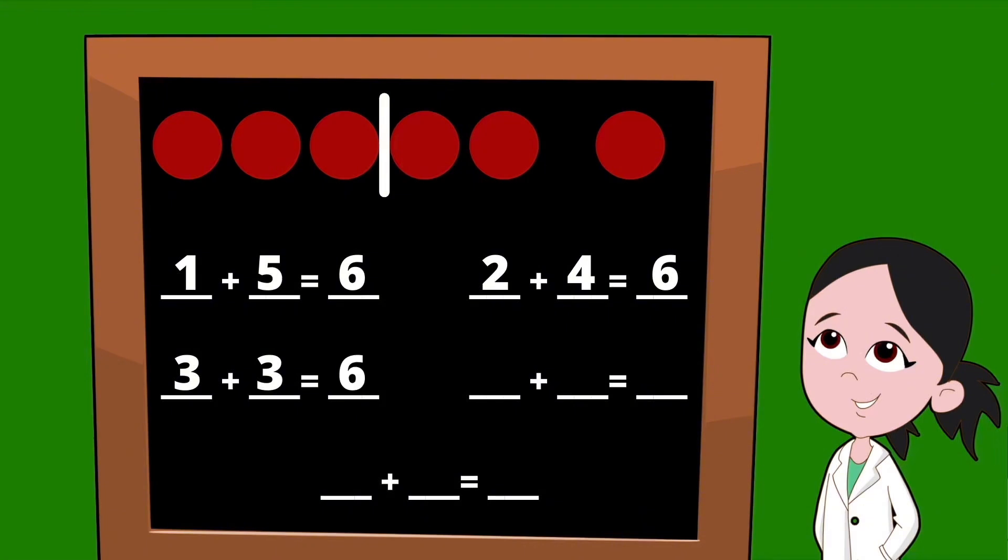Let's go ahead and slide our line to the right one more dot. On the left side of our line, we have four dots. So our first partner is going to be a four. On the right side of the line, we have two dots. So our next partner is a two. Four plus two equals six.